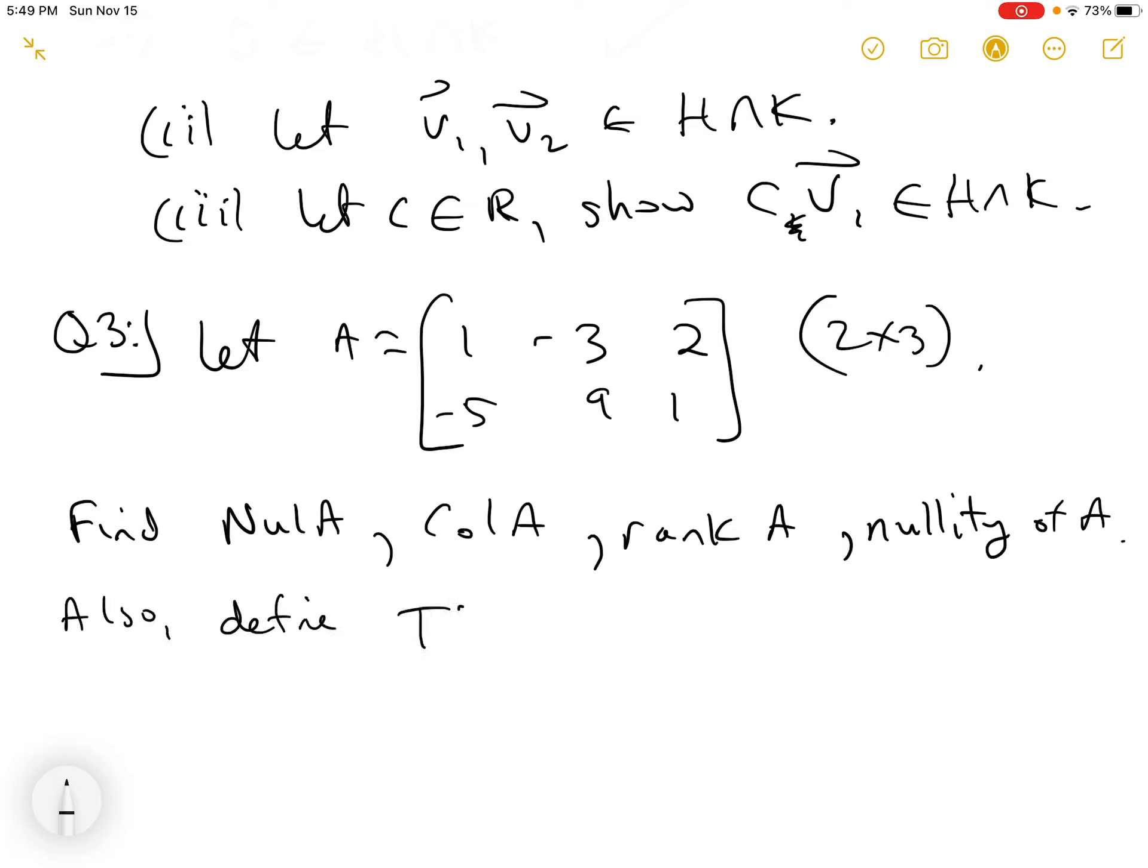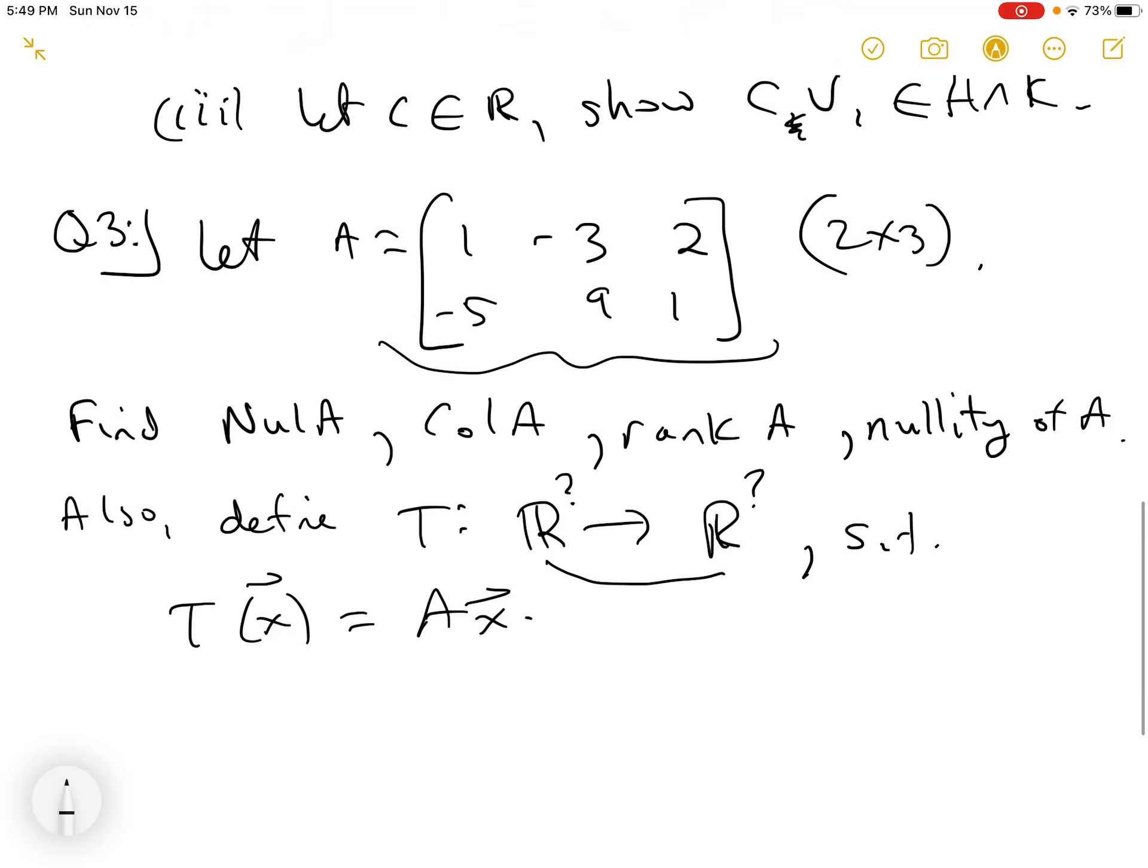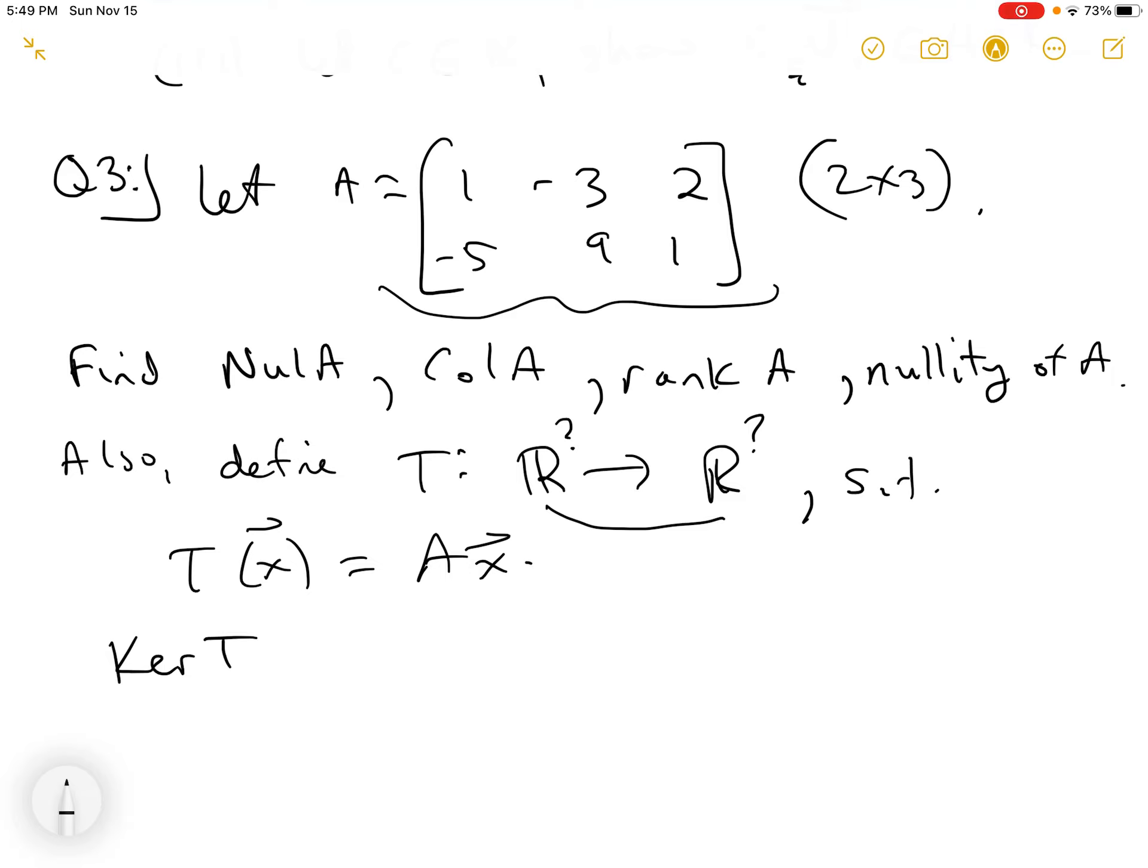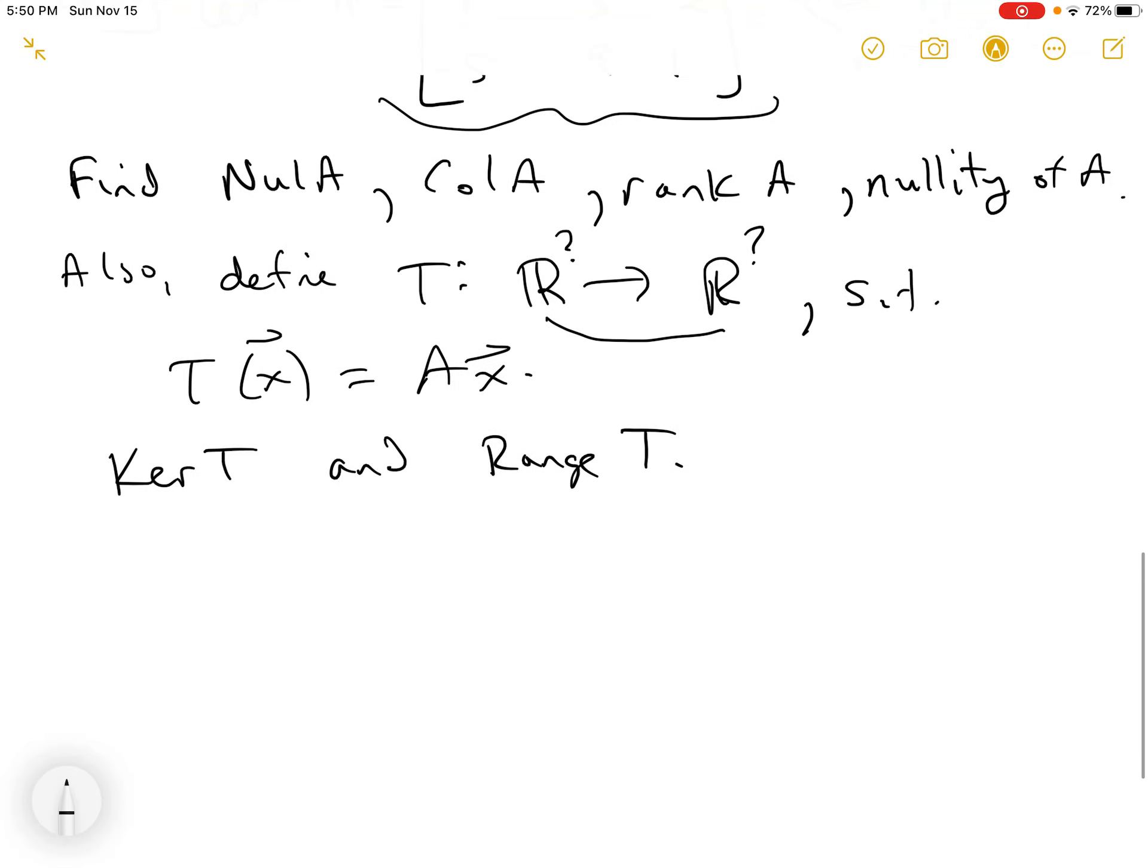Also, you're going to define a linear transformation T from R something to R something. That's part of the problem, figuring out what those numbers are. Such that T(x) equals AX. So we're defining this linear transformation to be, like we said before, all of them become this matrix multiplication by AX. And we're going from R whatever to R whatever, and you need to figure those two numbers out. Furthermore, you want to find the kernel of T and the range of T, and have a closed form for all of these.